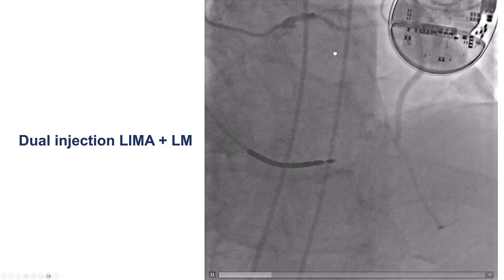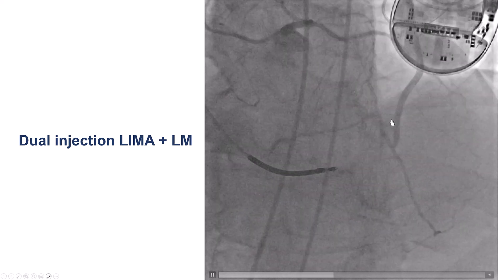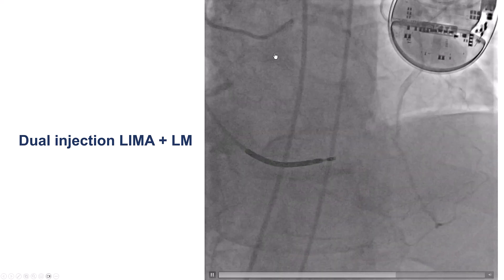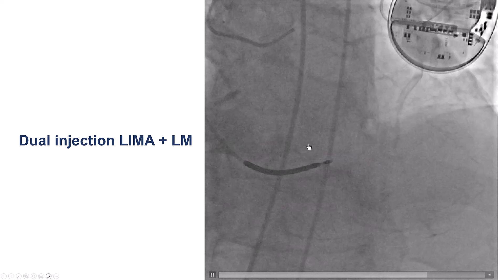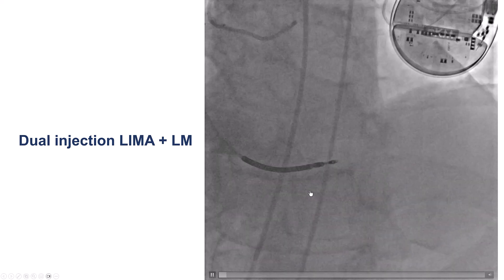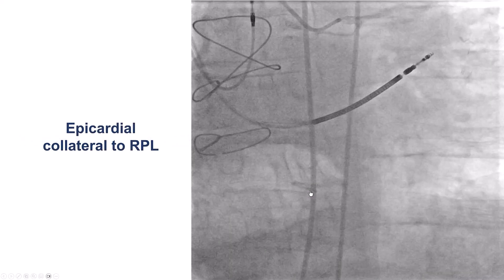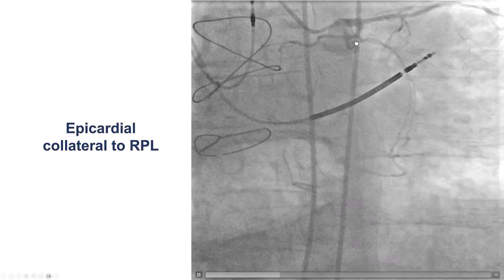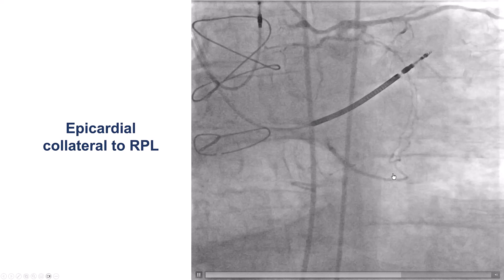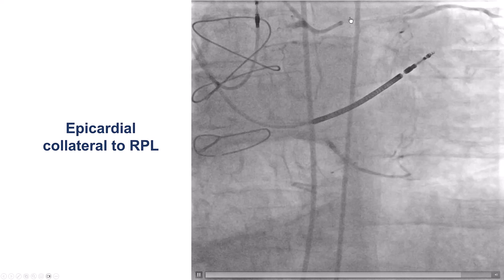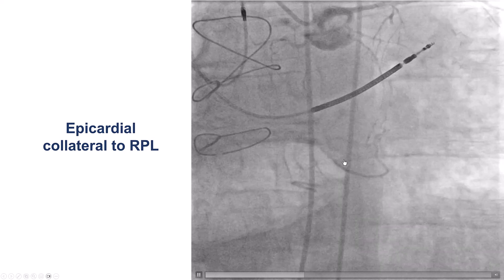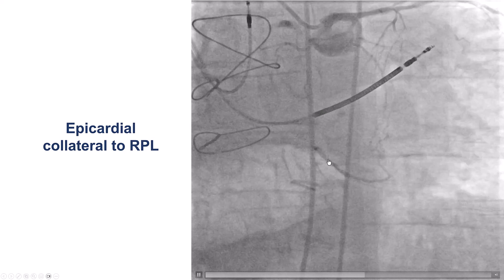The LIMA-to-LAD was patent and there was some collateral flow going to the posterolateral. This is a dual injection from the LIMA as well as the left main, showing the filling of the right posterolateral as well as the PDA. There was also an epicardial collateral coming from the left coronary system via the circumflex going to the posterolateral.